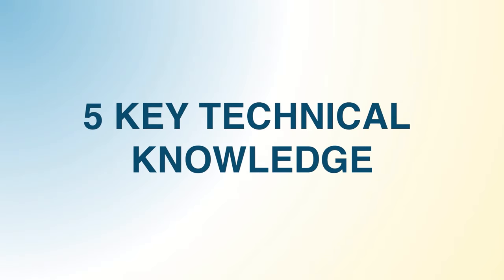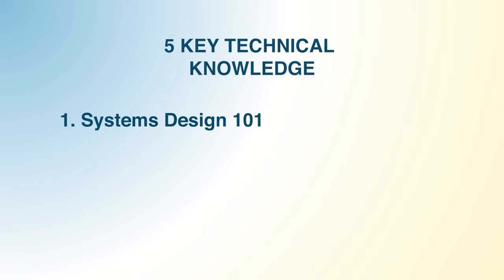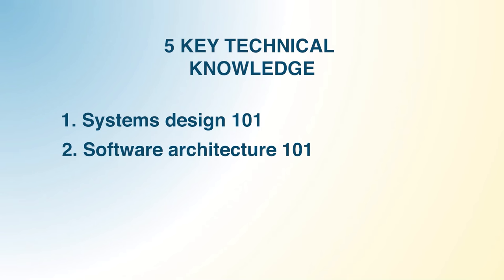When you read a job description for a generative AI product manager, they mainly talk about someone who has expertise in generative AI and can create product strategy using it — not someone who needs to code as an engineer. There are five key technical knowledge areas I recommend everyone study. Number one: System Design 101. Number two: Software Architecture 101 — understanding the high-level architecture of any software product, from Uber to Airbnb.